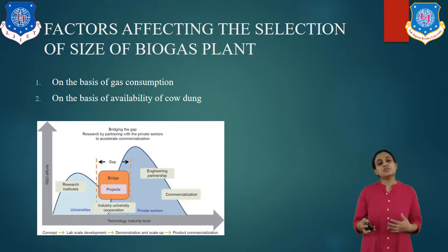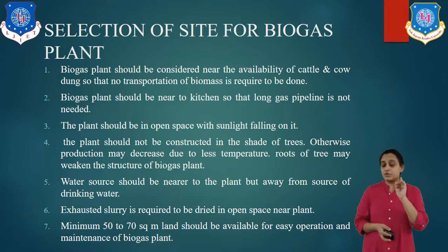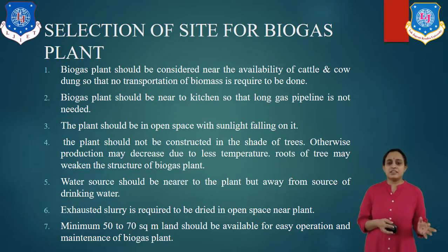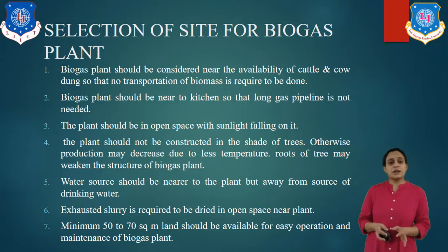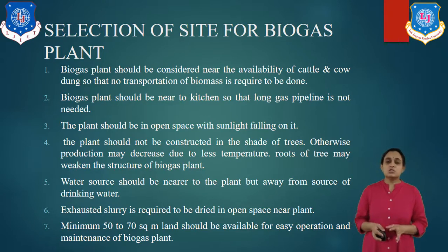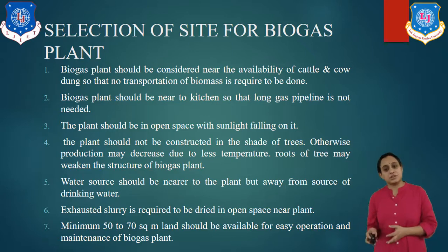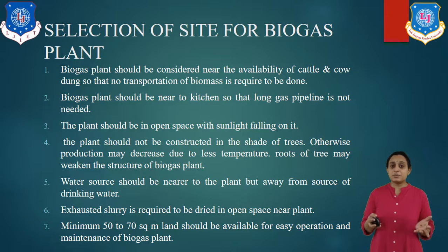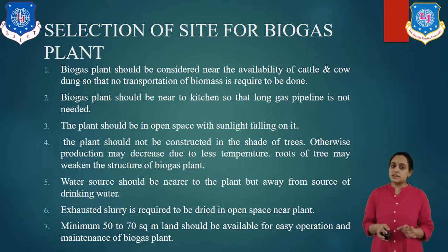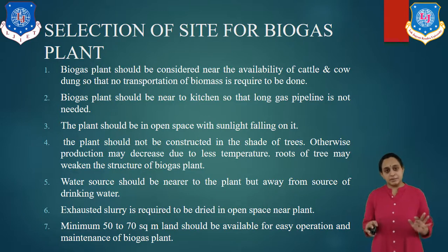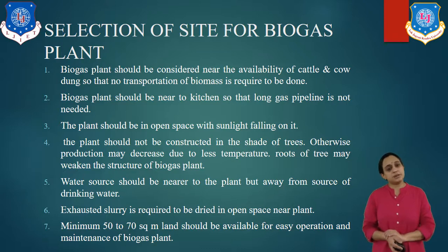Let us see how to select the site for the biogas plant. Site selection is very important. It should be considered near the availability of cattle so that no transportation of biomass is required. A biogas plant should be nearer to the kitchen so that long gas pipelines are not needed. The plant should be in open space with sunlight falling on it so that temperature can be maintained. The plant should not be constructed in the shade of trees, as this may decrease production due to lower temperature and tree roots may weaken the structure. The water source should be near the plant but away from the source of drinking water. Exhausted slurry needs to be dried in open space near the plant, and a minimum of 15 to 70 square meters should be available for easy operation and maintenance.